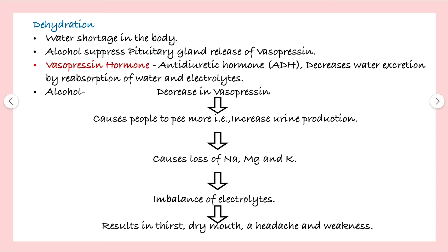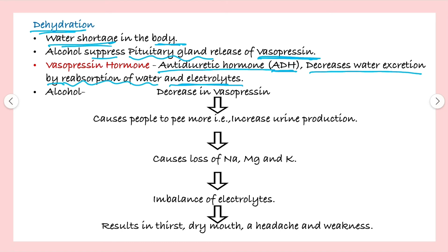One of the major symptoms is dehydration — water shortage in the body. Alcohol suppresses the pituitary gland's release of vasopressin, which is an anti-diuretic hormone (ADH). Its function is to decrease water excretion by reabsorption of water and electrolytes. When a person intakes alcohol, the level of vasopressin decreases, causing a person to pee more and increasing urine production. This ultimately causes loss of sodium, magnesium, and potassium ions, creating an electrolyte imbalance. As a result, a person feels thirst, dry mouth, headache, and weakness.